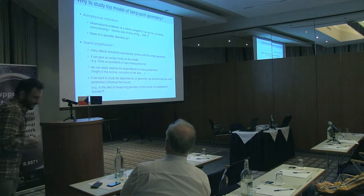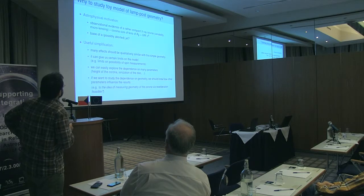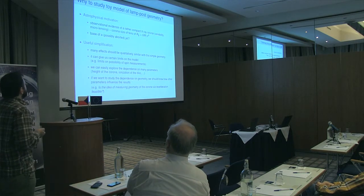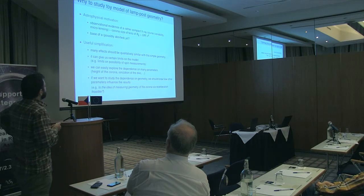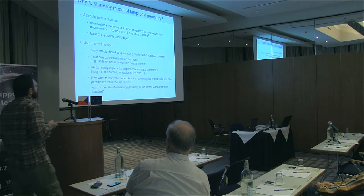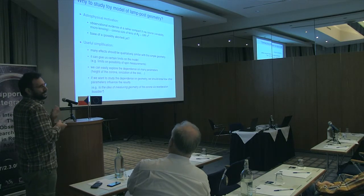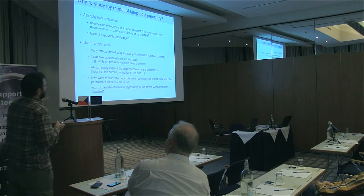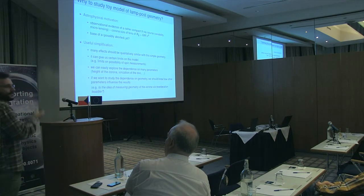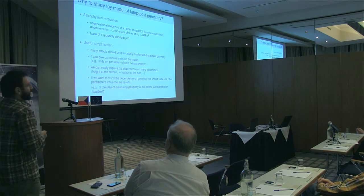What I will talk about is X-ray reverberation in AGN in the lamppost geometry. By lamppost geometry we mean a compact source on the axis of the system illuminating the accretion disk. Some astrophysical motivation: there is observational evidence of a rather compact X-ray source from variability studies and microlensing studies, and it seems that corona size is really of order 10 or even lower than 10 R_G in diameter. There is also some discussion about a possibly aborted jet on the axis of the system, which could serve as a source of primary X-rays in AGN.